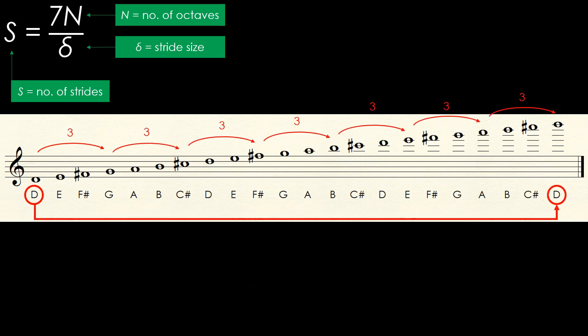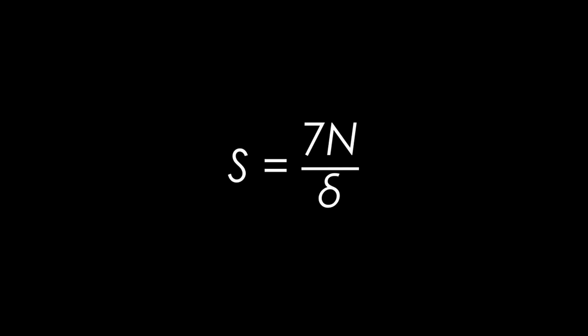In fact, any stride size takes the same number of octaves to reach the starting note. And these two values cancel out, leaving 7 as the prevailing number for all cases, except when the stride size is 0 or 7.